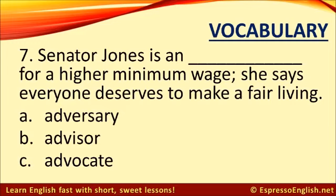Number seven. Senator Jones is an... for a higher minimum wage — she says everyone deserves to make a fair living. A. Adversary. B. Advisor. Or C. Advocate. The correct answer is C. Advocate. If you are an advocate for a cause, it means you support that cause and work to make it happen.